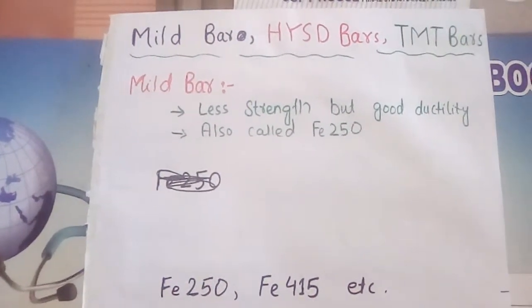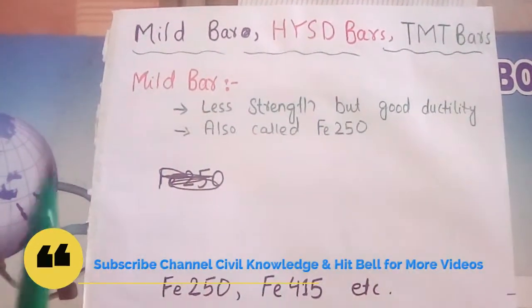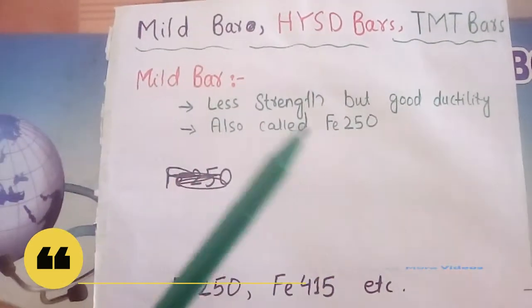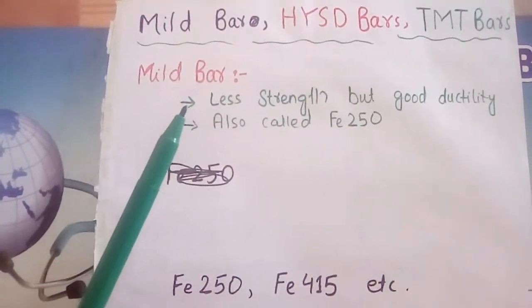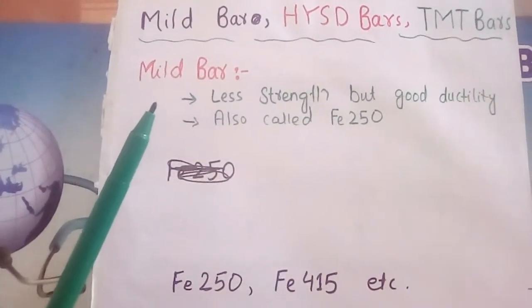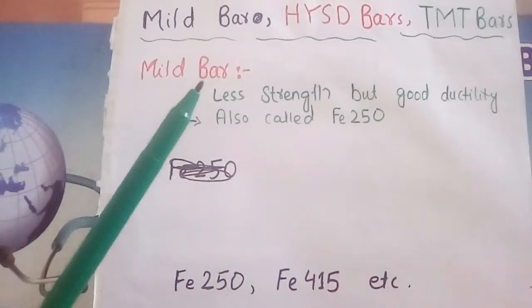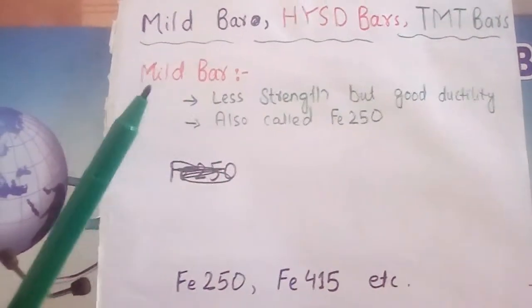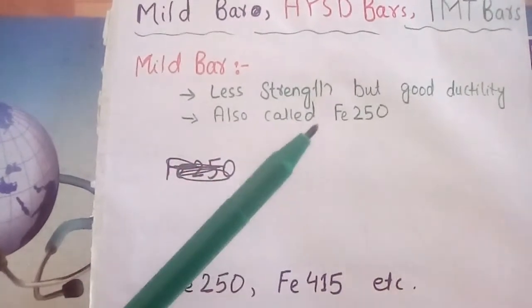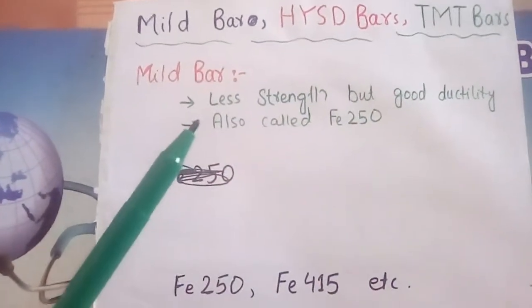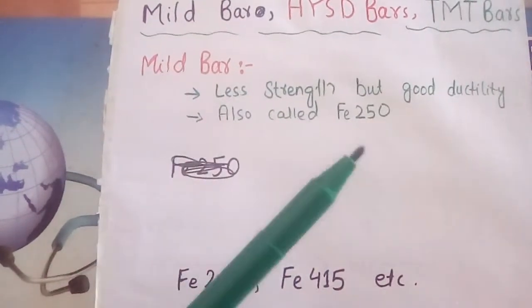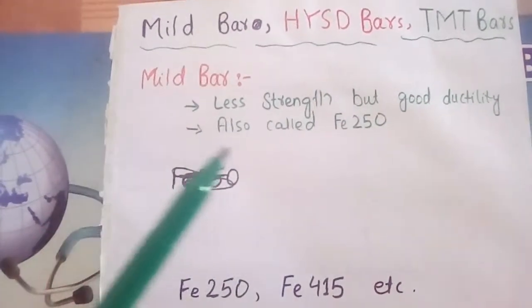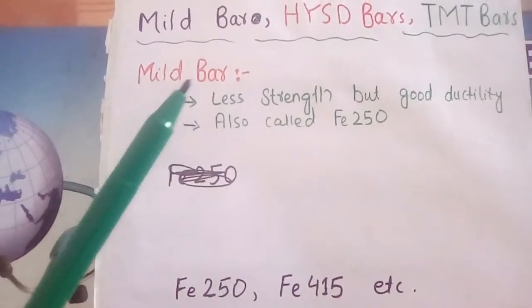First, what is mild bar? Mild bar is actually the bar having less yielding strength but good ductility. Due to this good ductility, mild bar is widely used in earthquake resisting structures. This bar can also be called Fe 250 bar because the strength of mild bar is 250 newton per millimeter square.